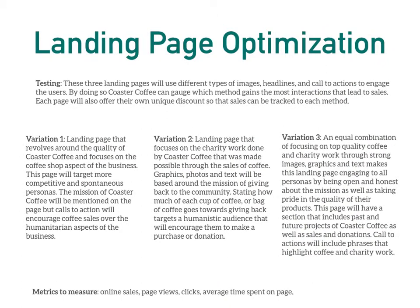When it comes to our landing page optimization, there are three different landing versions to test. They will use different types of images, headlines, and call to actions to engage the users. By doing this, Coaster Coffee can gauge which method will gain the most interactions that leads to sales.